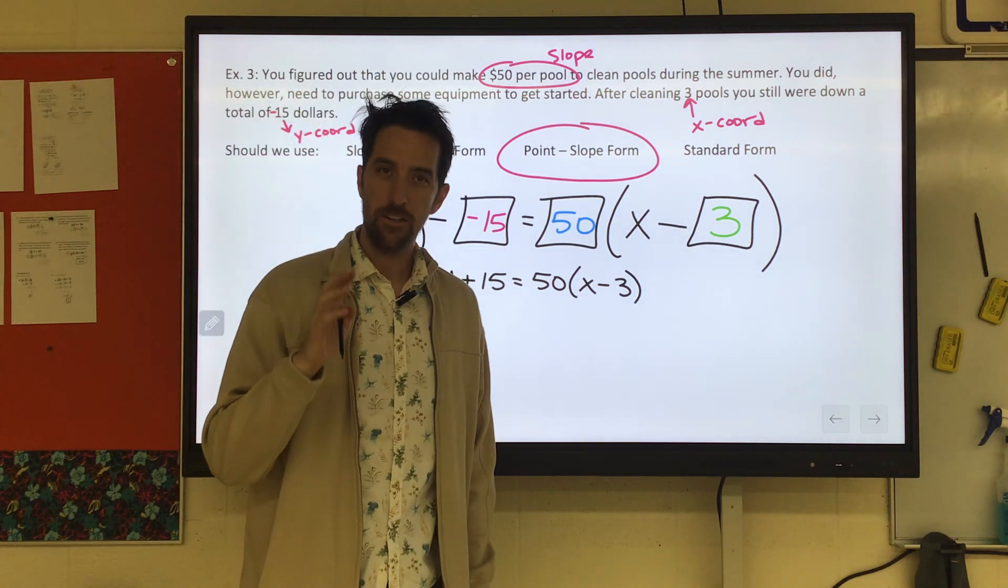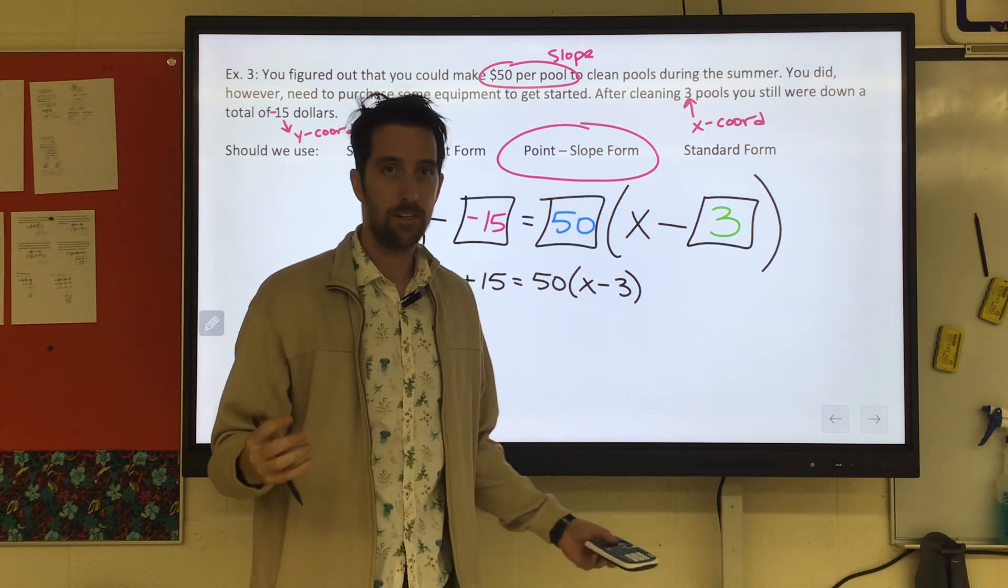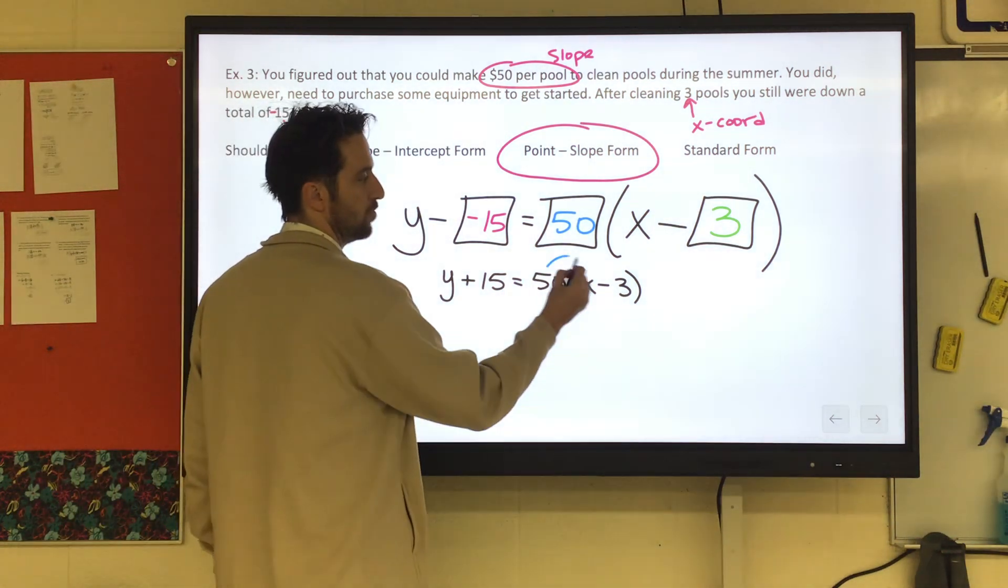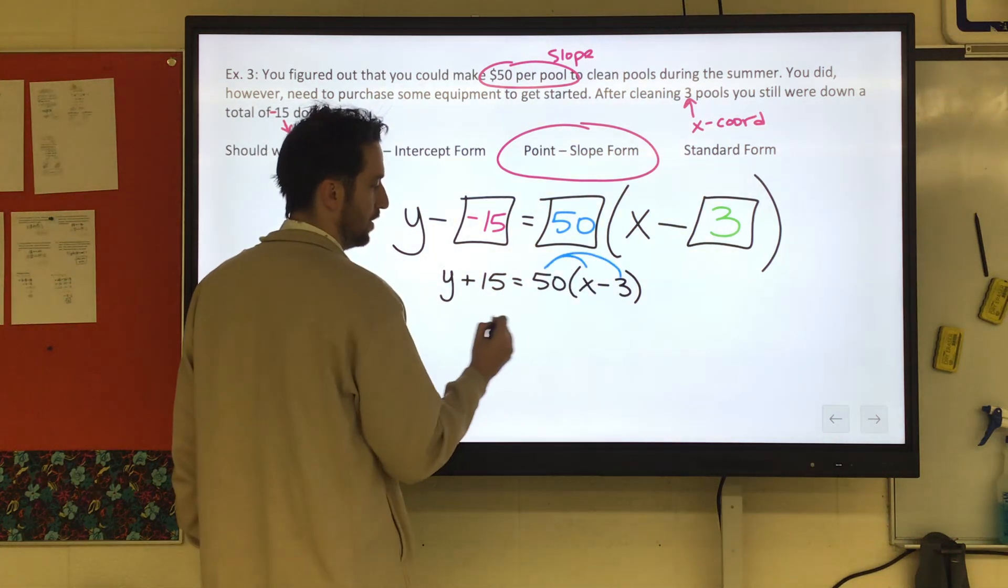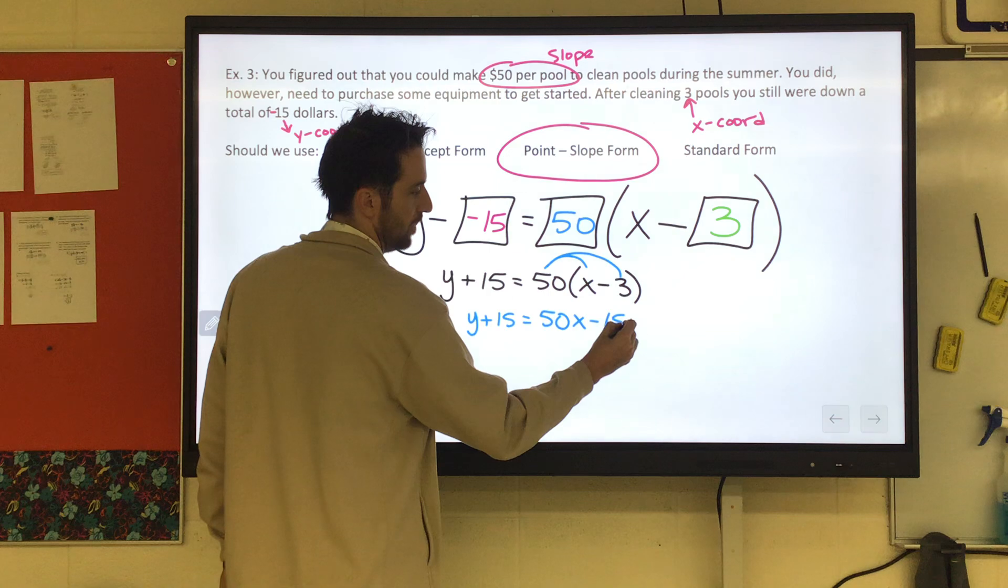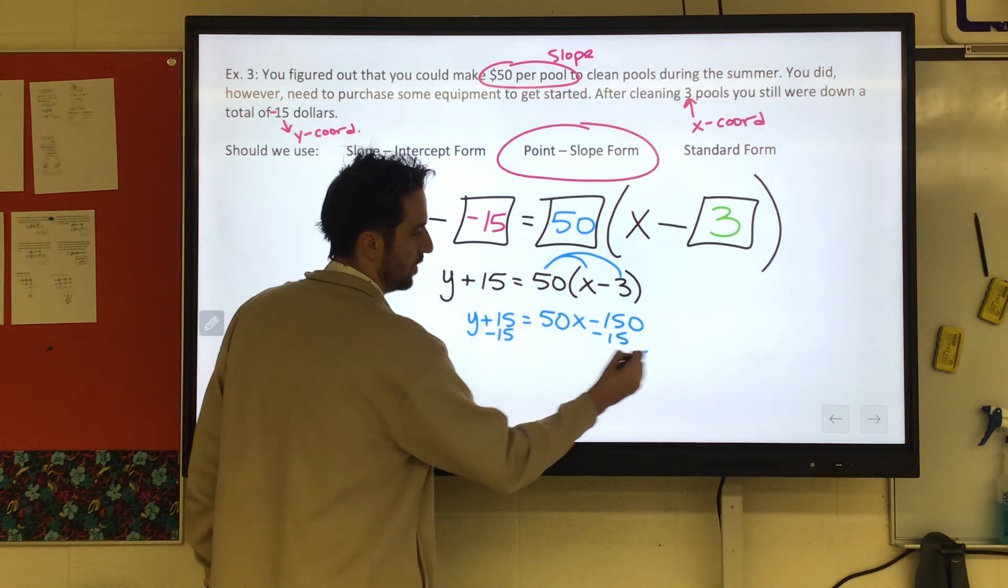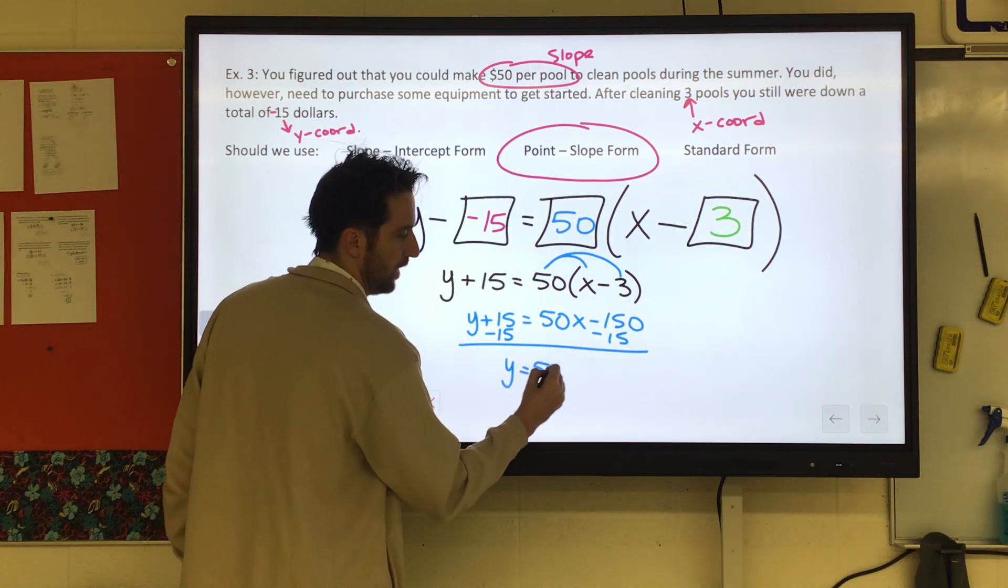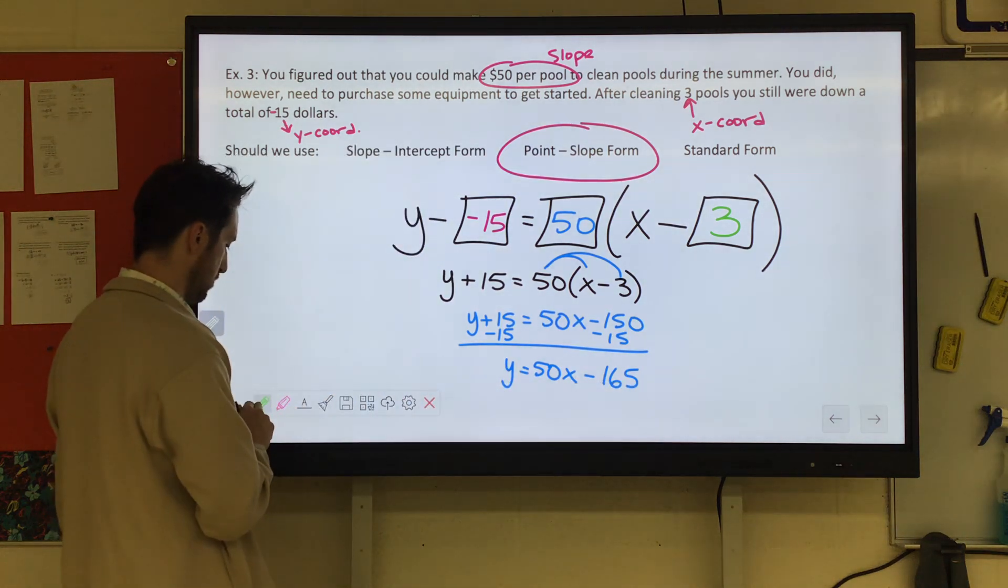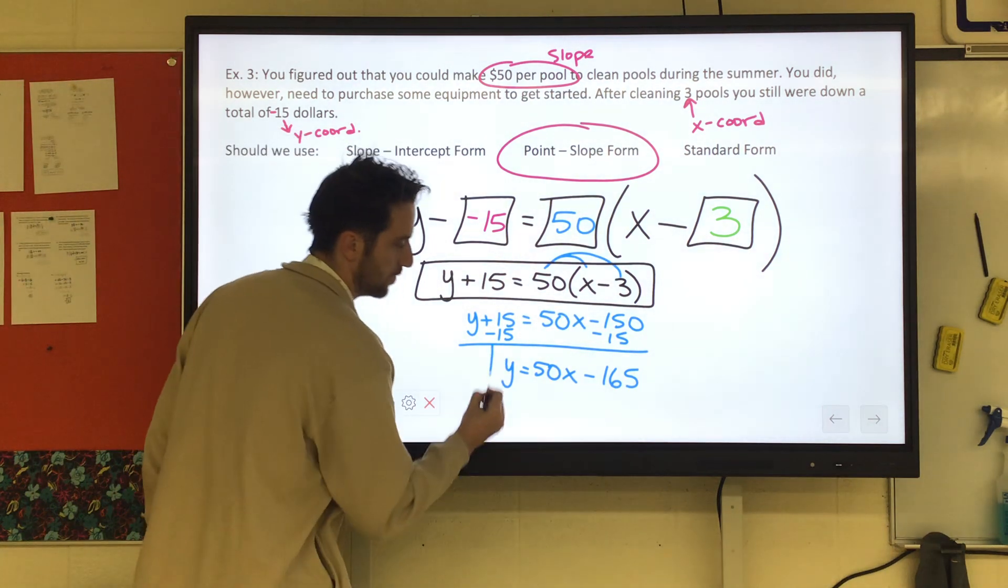If we're feeling fresh, could we get that into one of our other forms? Let's get it into both. So, usually we go next to a slope-intercept form. So we would distribute the 50. So we'd have y plus 15 equals 50x minus 150. And then we get rid of the plus 15 by subtracting 15, which gives us y equals 50x minus 165. There it is in slope-intercept form. Here it was in point-slope. Now we have it in slope-intercept form.